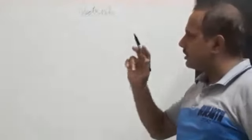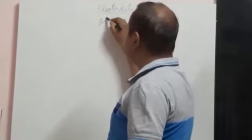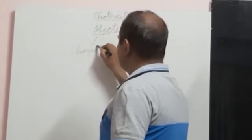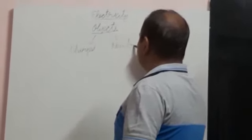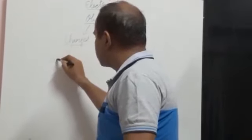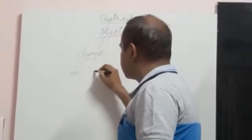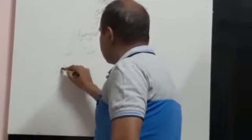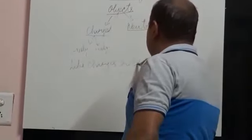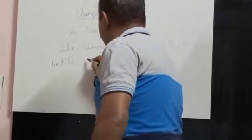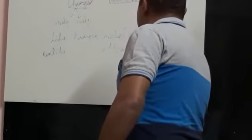Without going into depth, let us recapitulate what you studied in your previous classes. There are two types of objects: they can be charged or neutral. Neutral objects carry no charge; charged objects carry a certain charge — either negative or positive. Like charges repel each other, and unlike charges attract each other.